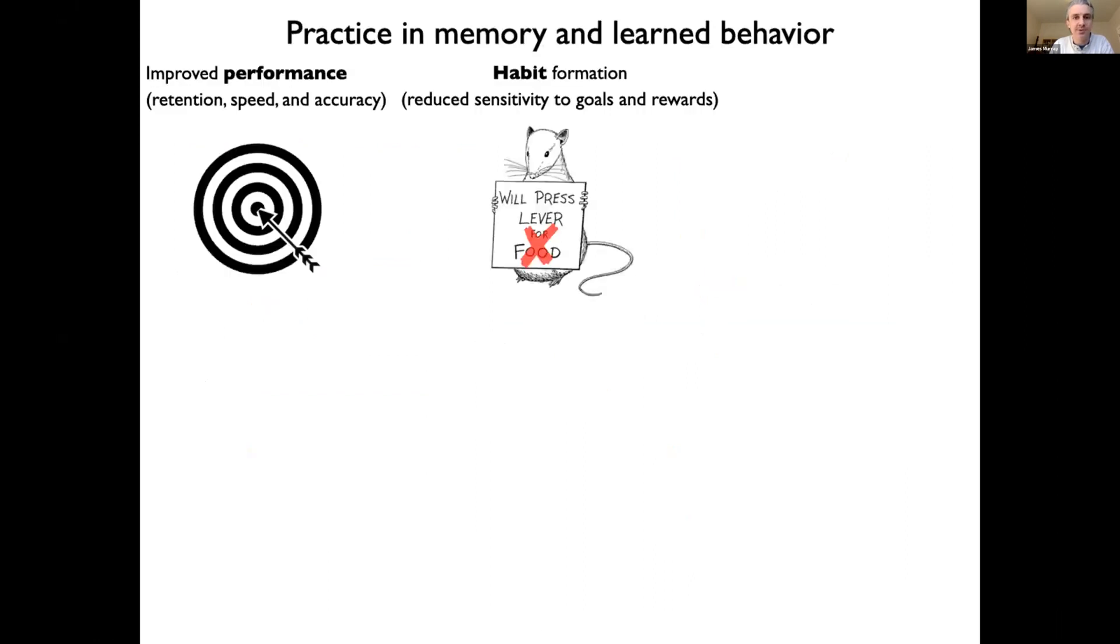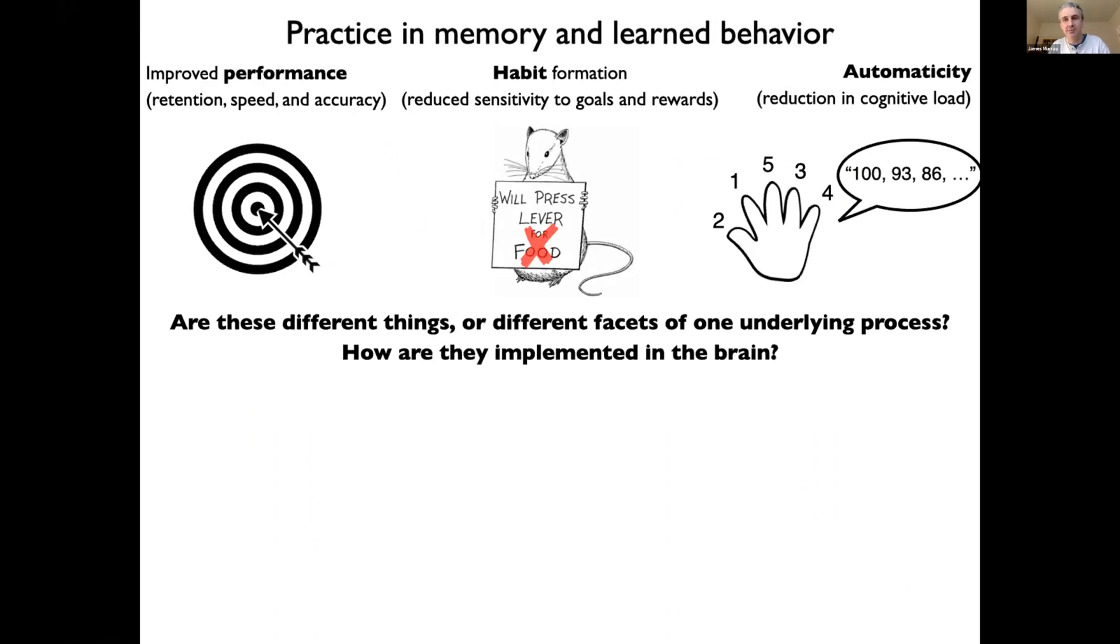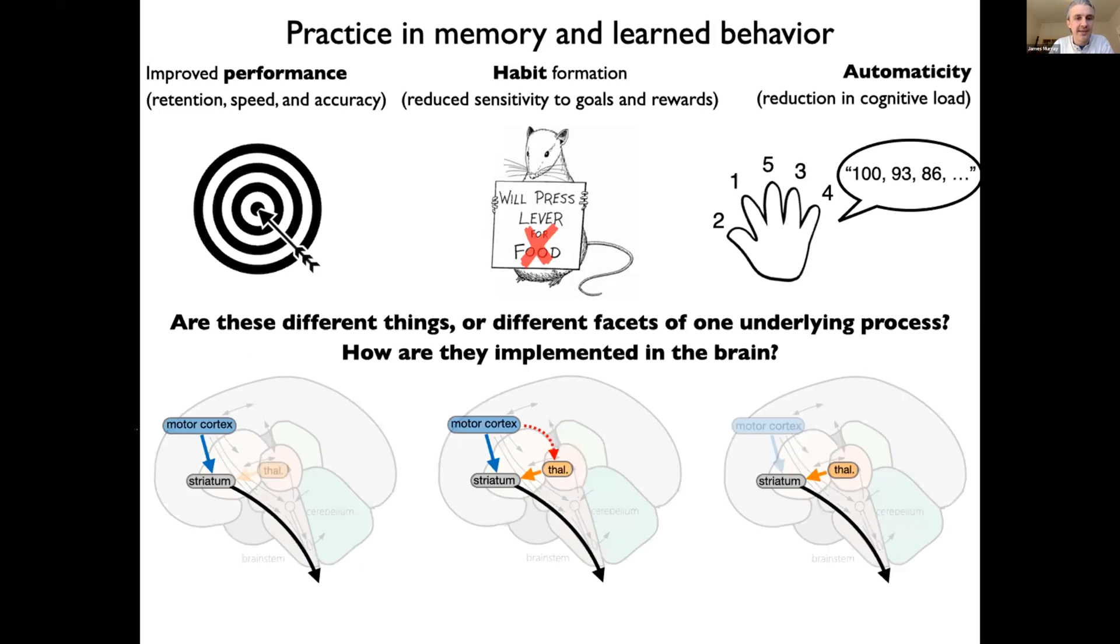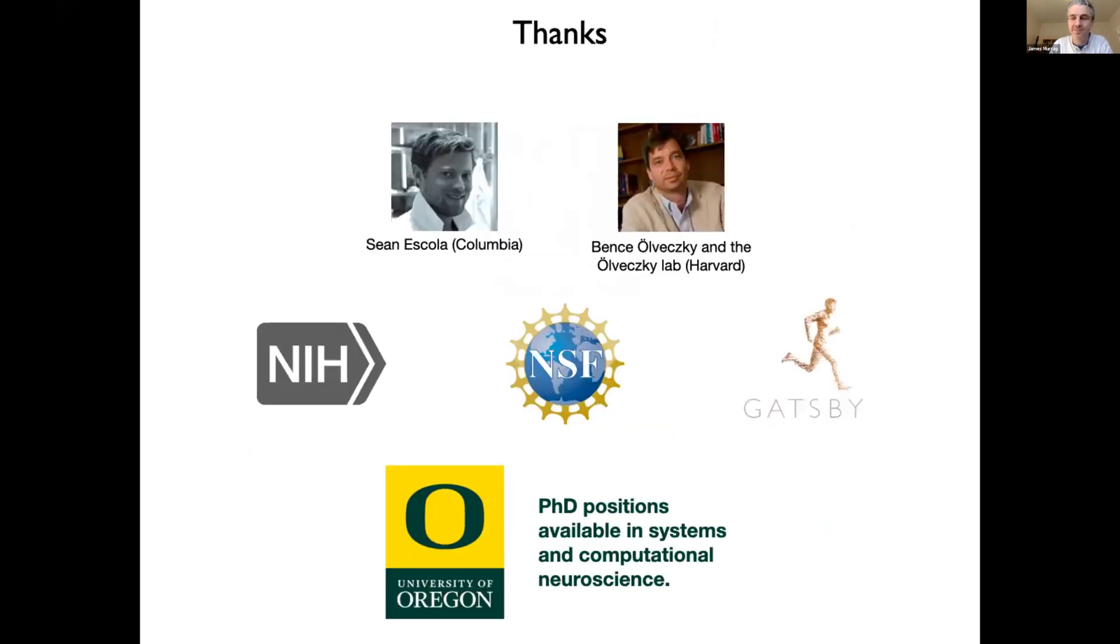Okay. So just to summarize, I started off asking whether these are all different things or different aspects of the same thing. And according to our theory, motor cortex is necessary for fast learning involving performance, and then habit formation and automaticity correspond to this transfer of control from a cortical to a subcortical pathway. So with that, I'll be happy to wrap up and take questions if there's time for one.